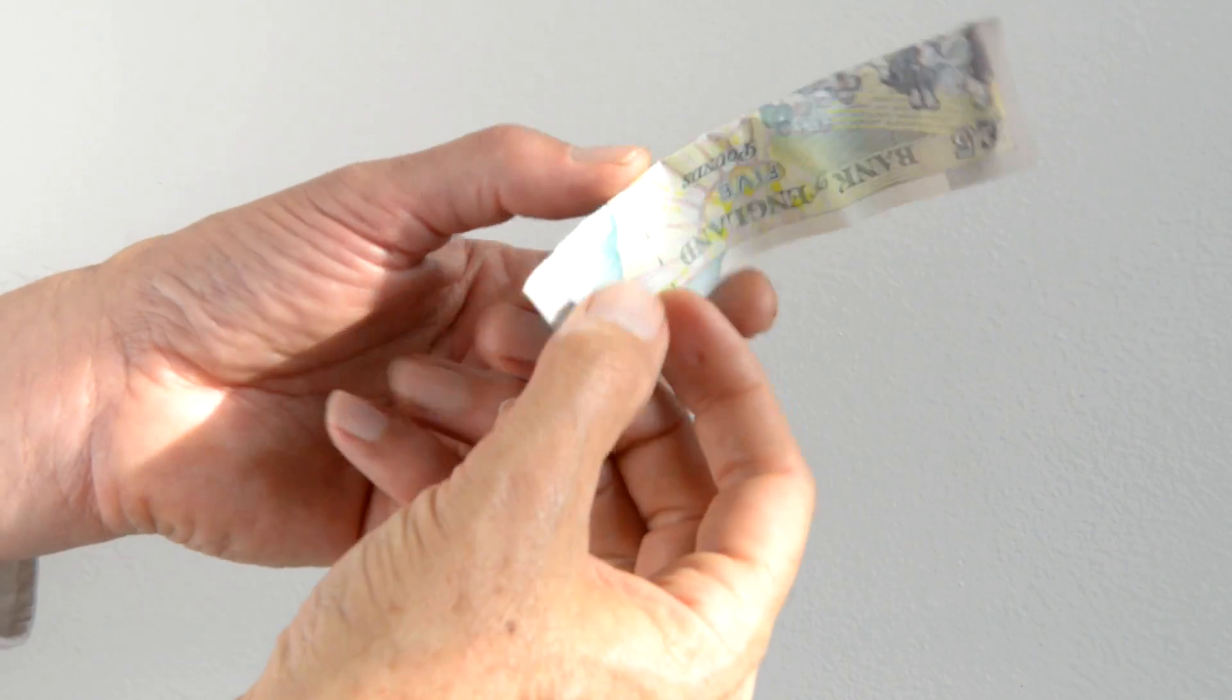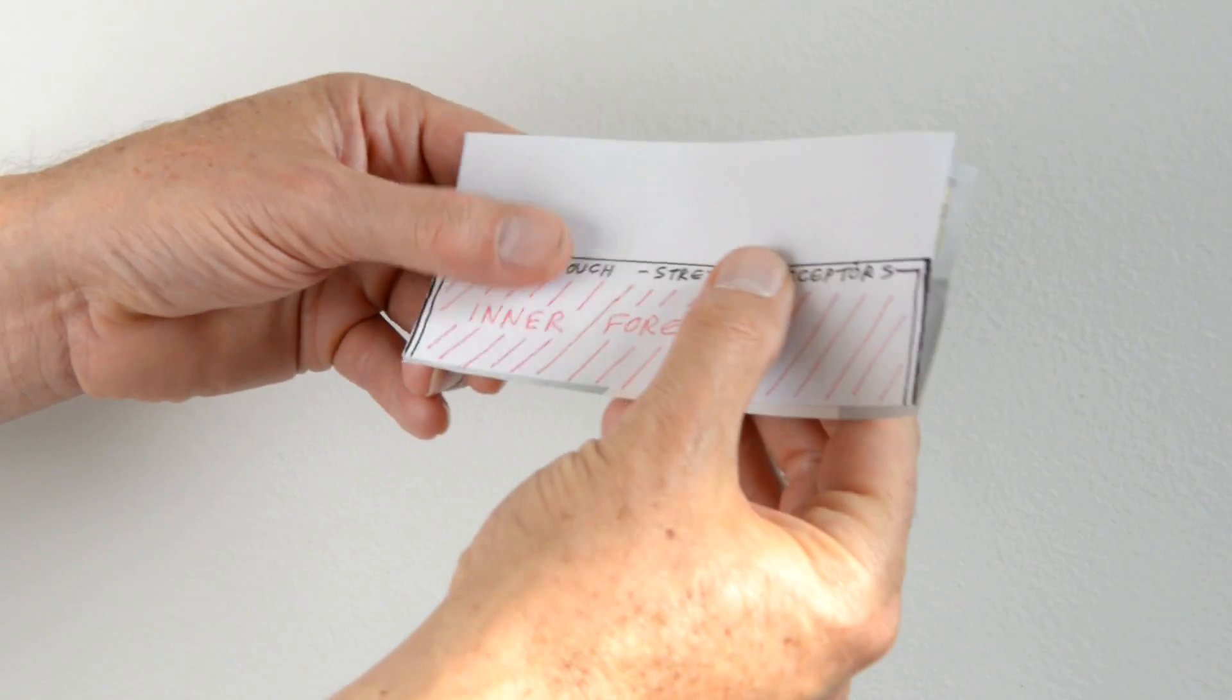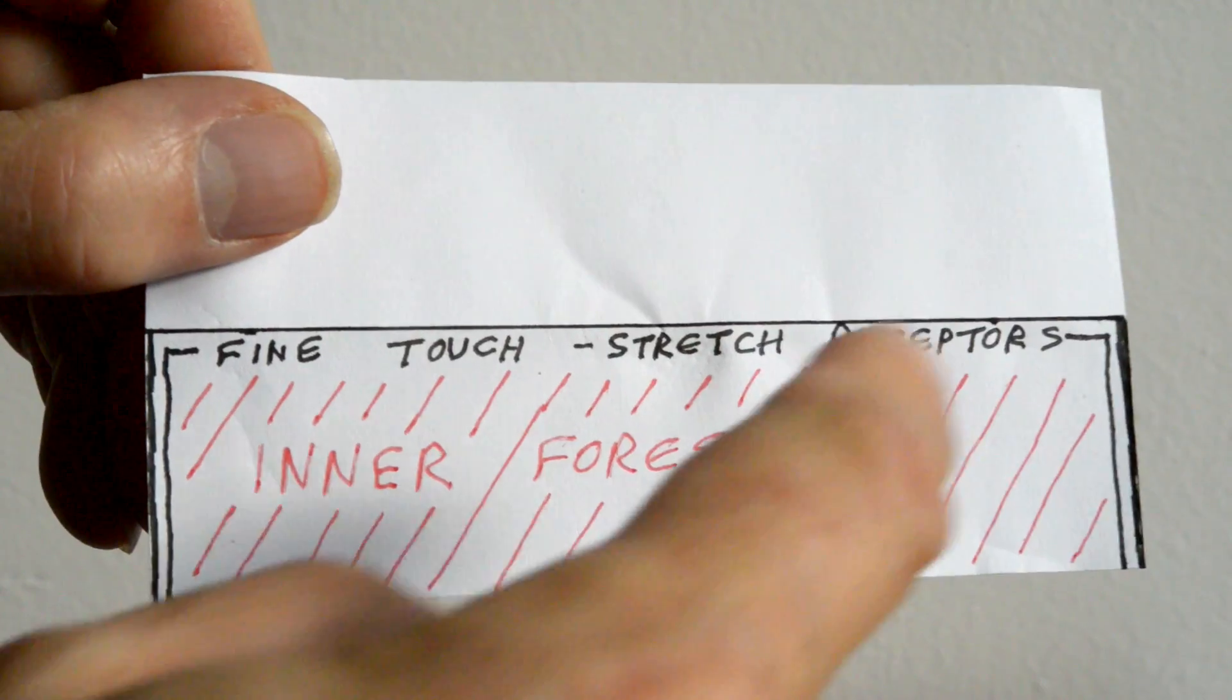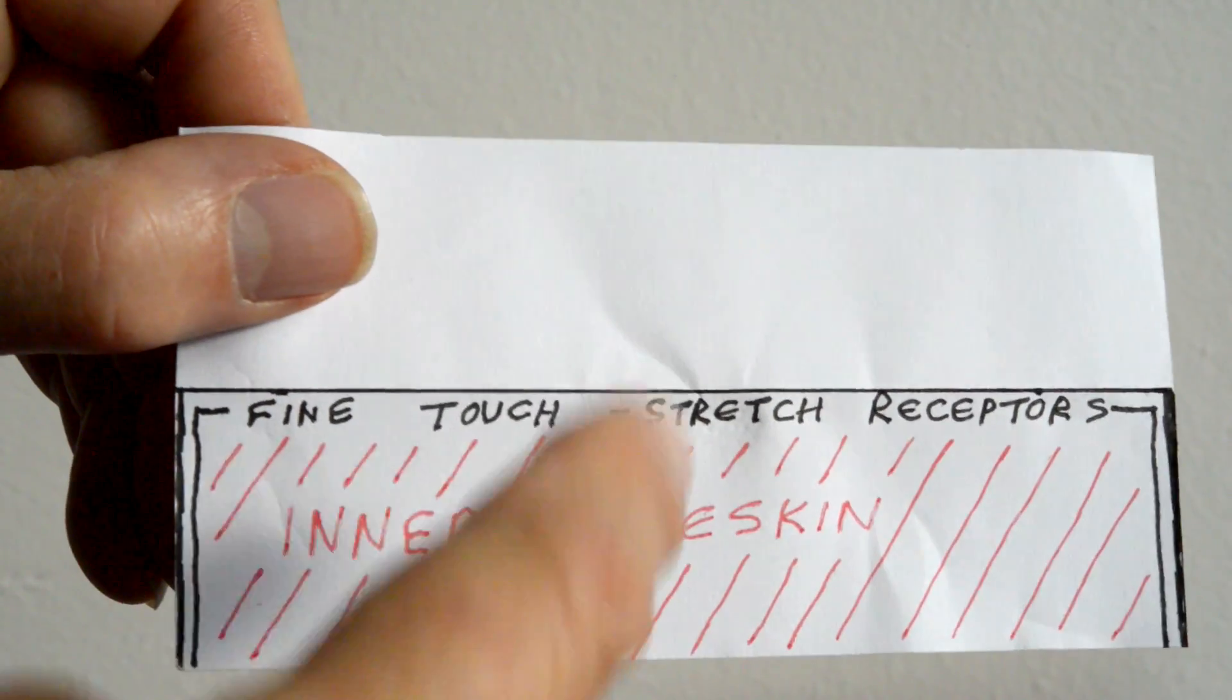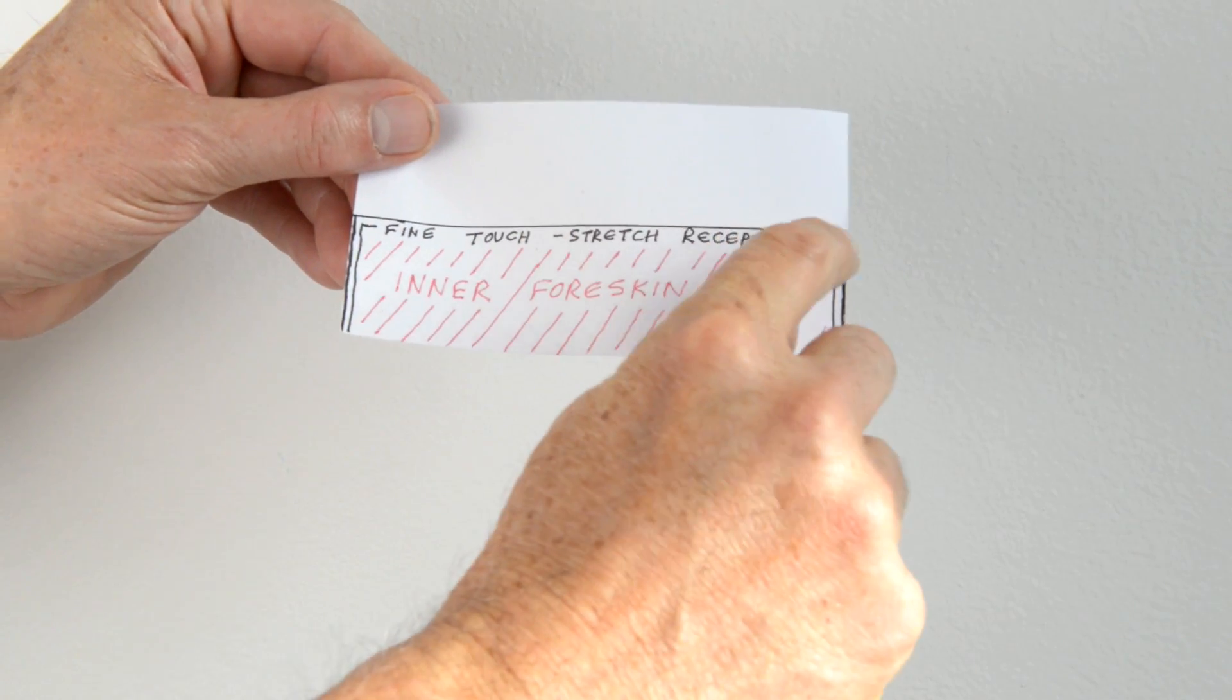Let's have a look at the tissue that's taken in a bit more detail. I've made a piece of paper here, the same area as our £5 note, and I've colored it here to represent the inner foreskin with this red cross hatching. And this line represents the ridge band or the lips.